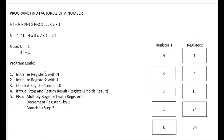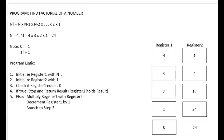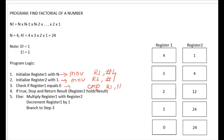Now we convert this logic into ARM assembly code line by line. The first instruction initializes register R1 with n — in this example n equals 4 — using a MOV instruction. The second instruction initializes register R2 with 1. The third instruction performs a comparison: we compare register R1 with value 0. If R1 equals 0, we branch on equal to the end of the program.